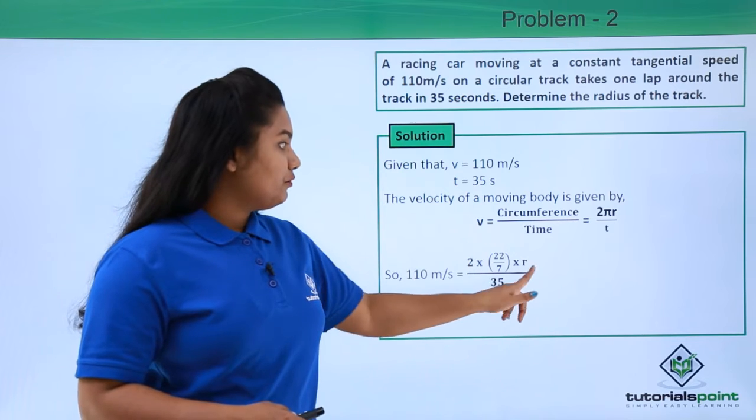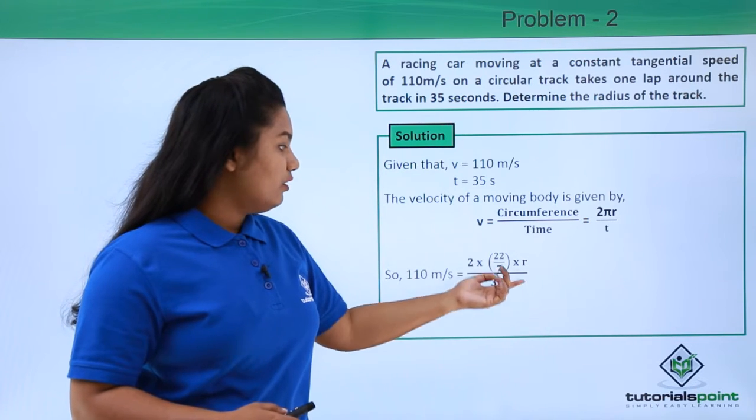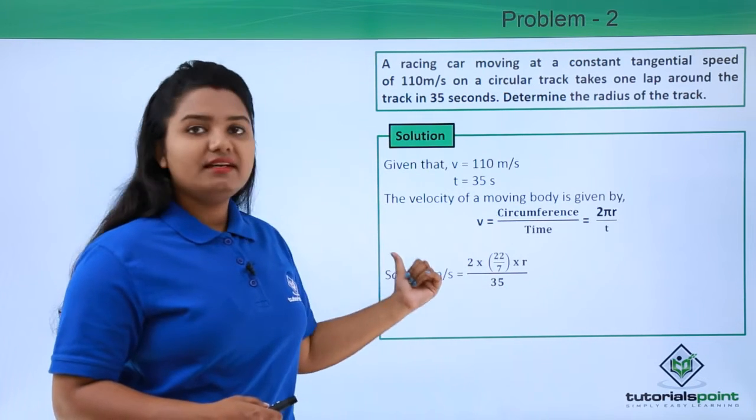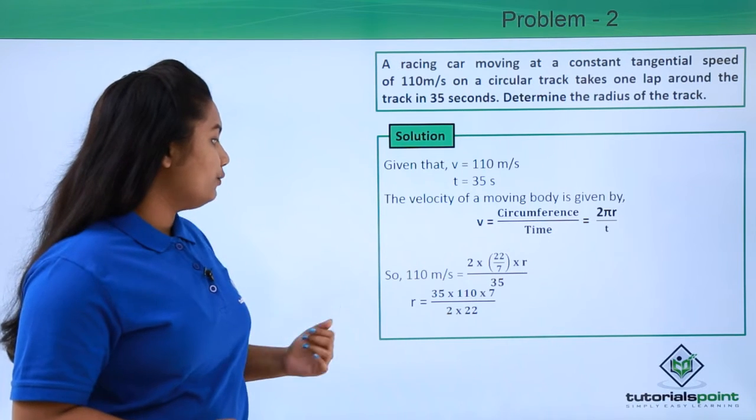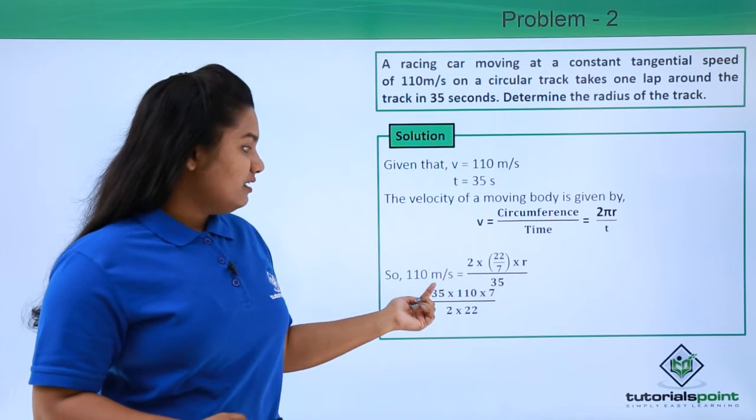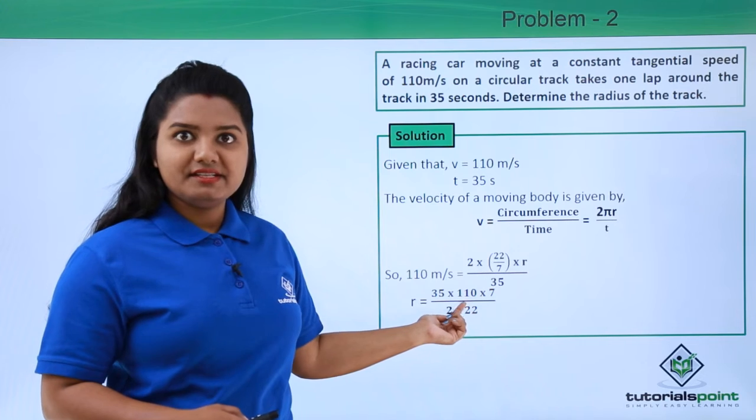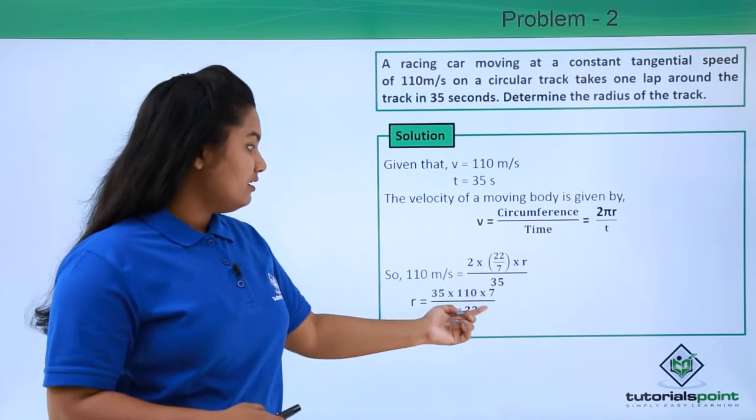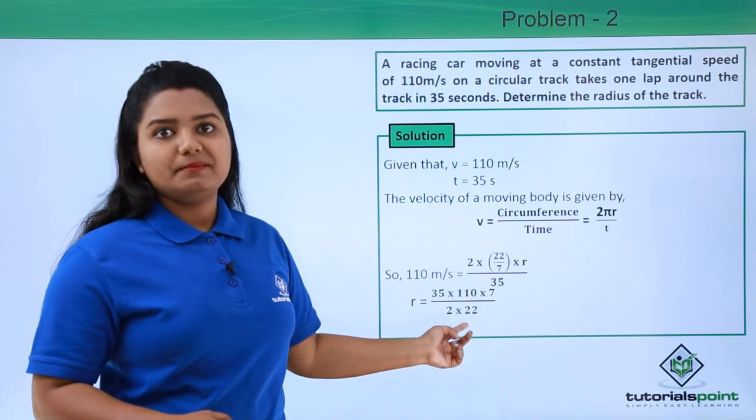Now in order to evaluate what is the radius, we need to take all the other things to the other side. So on doing that we have r equals 35 multiplied by 110 multiplied by 7 divided by 2 multiplied by 22.